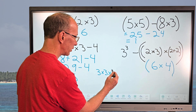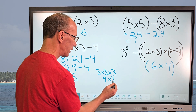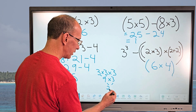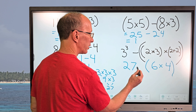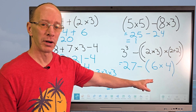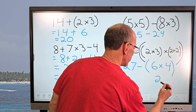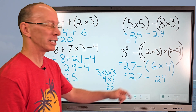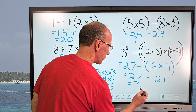3 to the third power means 3 times 3 times 3. So 3 times 3 is 9, and 9 times 3 equals 27. Now inside the big parentheses I do 6 times 4, which equals 24. Don't forget the subtraction sign — so it's 27 minus 24, which equals 3. The answer is 3.